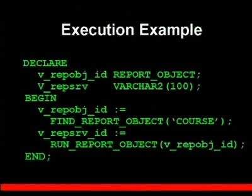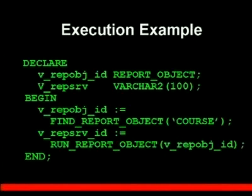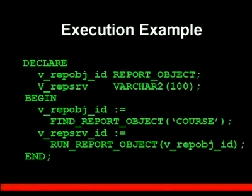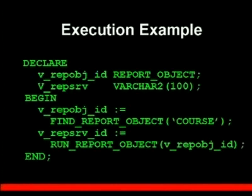Now there's another variable, which captures the return from the run_report_object built-in. Some built-ins work this way — even though they launch something, they also return a value. So this is run_report_object, and you give it the ID of the course report and run it that way.